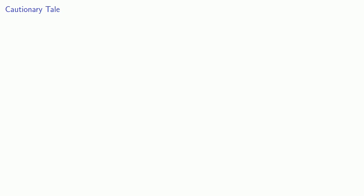Now here's a cautionary tale that suggests we should be very careful. So we can find the Maclaurin series for 1 over 1 minus x, it's going to be 1 plus x plus x squared plus x cubed and so on.